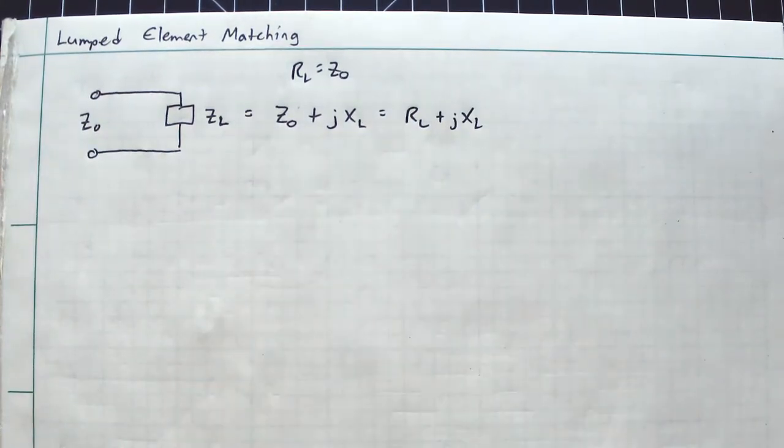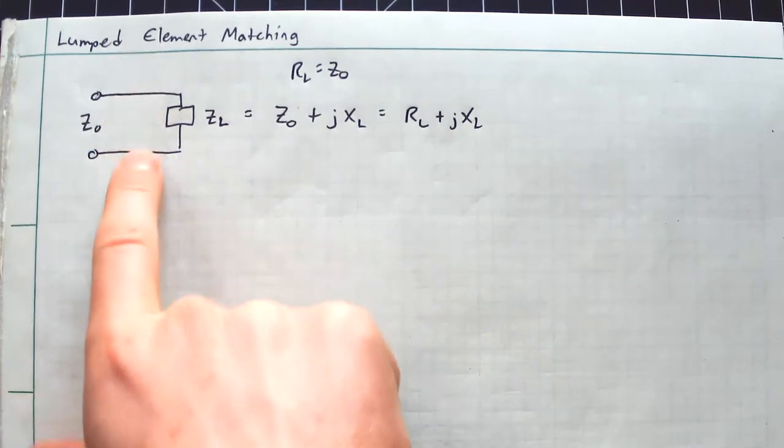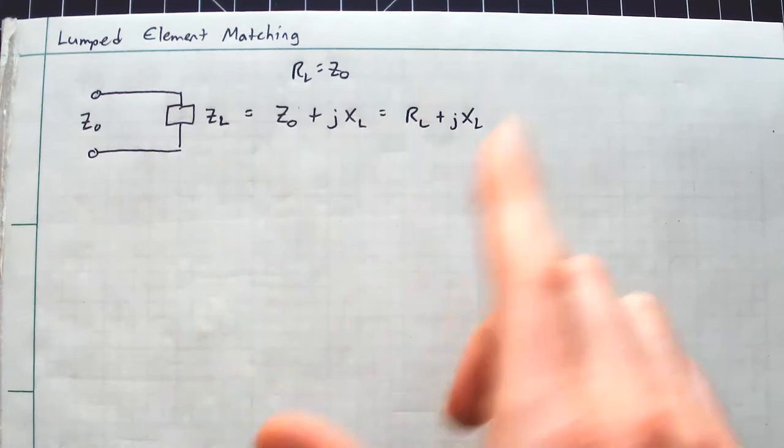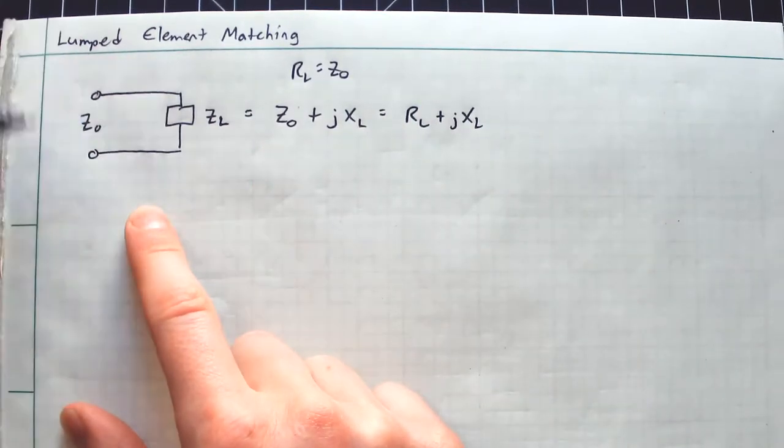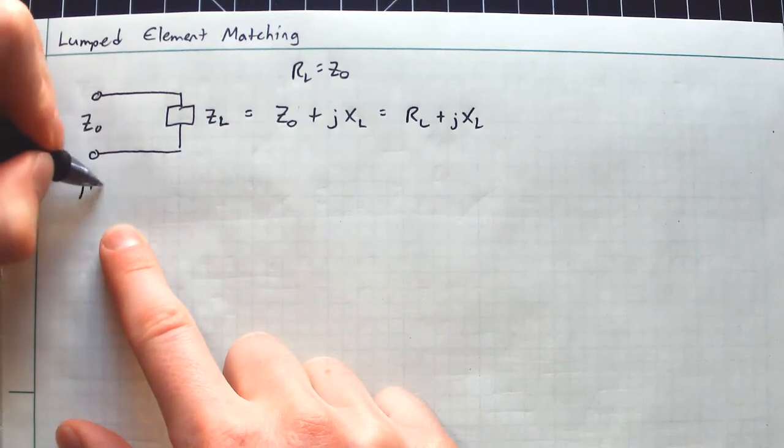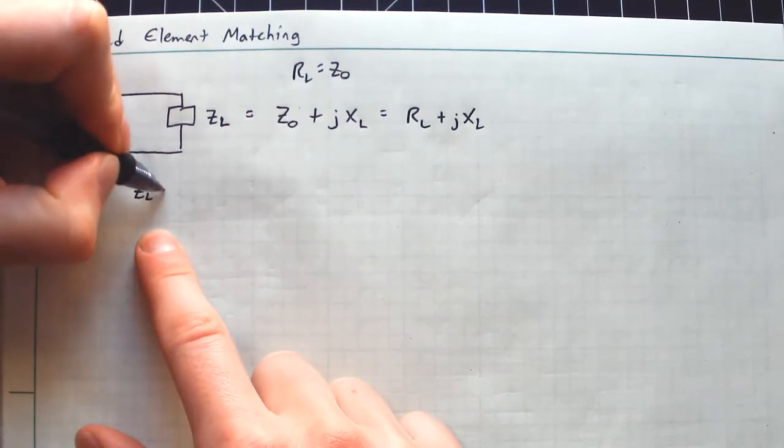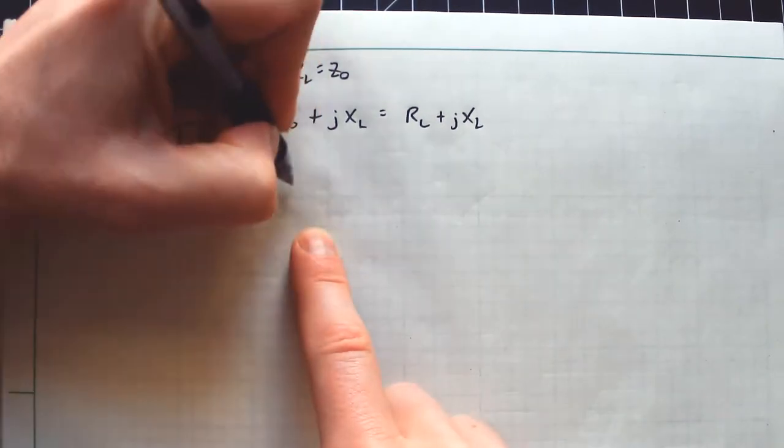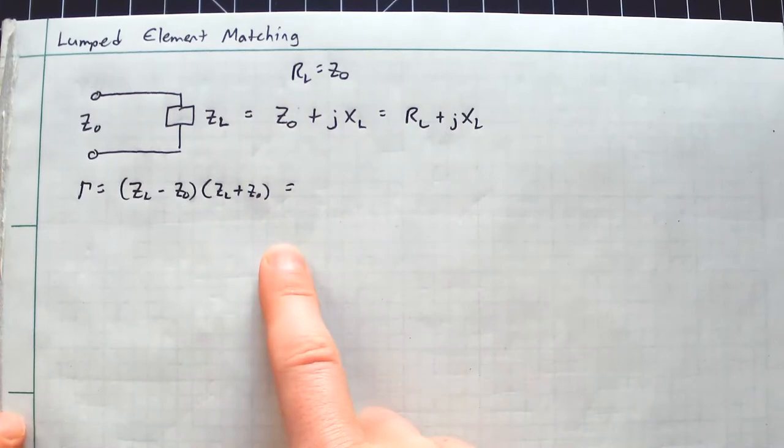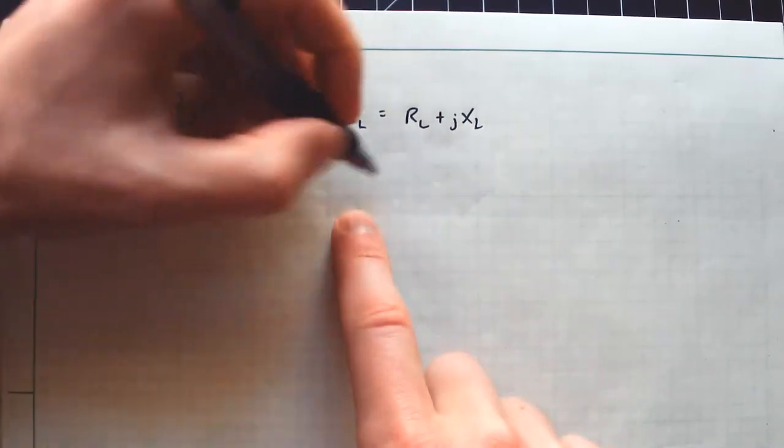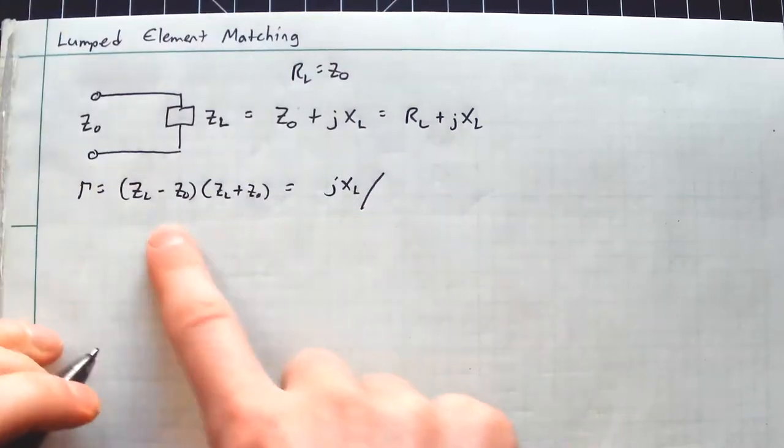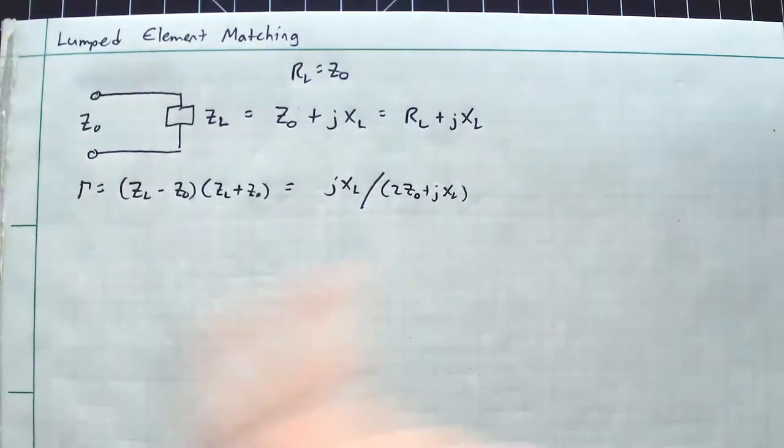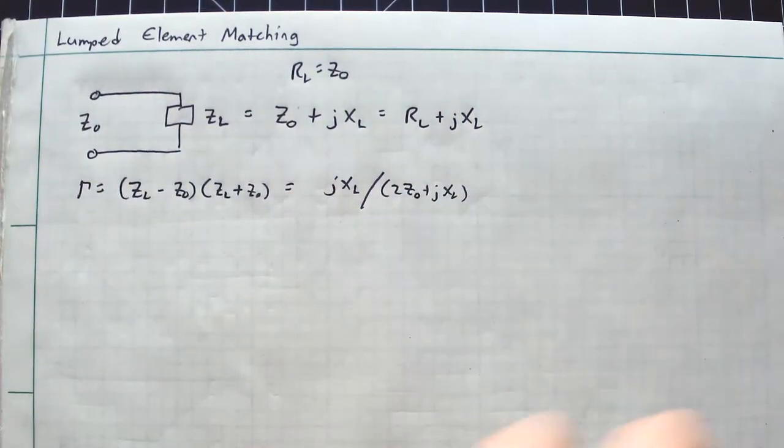So when we talk about lumped element matching, what we're basically saying is what can I insert here at the input to this load to create a matched load. Because if I calculate the reflection coefficient, gamma is going to be ZL minus Z0 divided by ZL plus Z0. And what you'll get is jXL divided by 2Z0 plus jXL. So there's a mismatch. Somehow I want this reactance to go away.